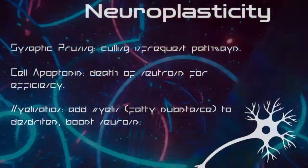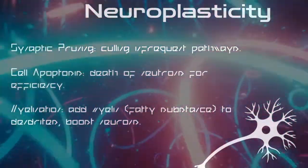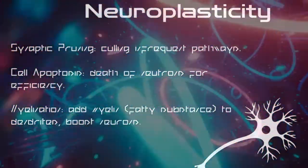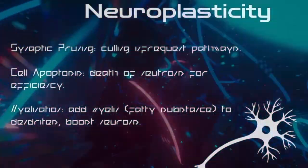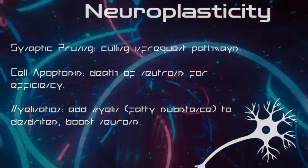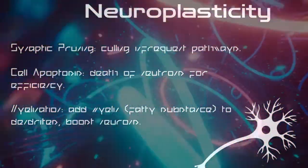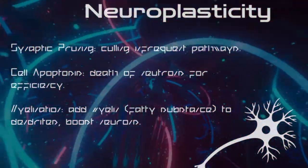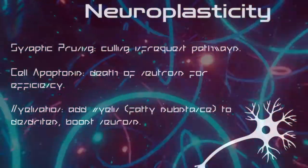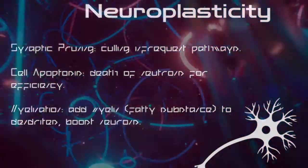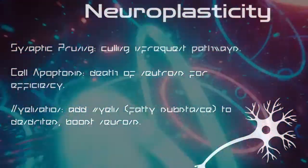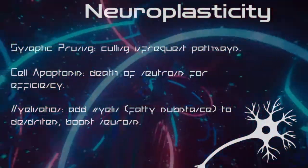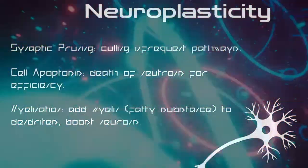Firstly, the brain of the infant undergoes synaptic pruning, which is the culling of infrequent pathways to improve efficiency in neuron connectivity. This includes cell apoptosis, in which the death of certain neurons allows for reinforcement of certain pathways that help speed up certain connections, and myelination, which is the adding of myelin, a fatty substance to dendrites that boosts transmission of neurons.